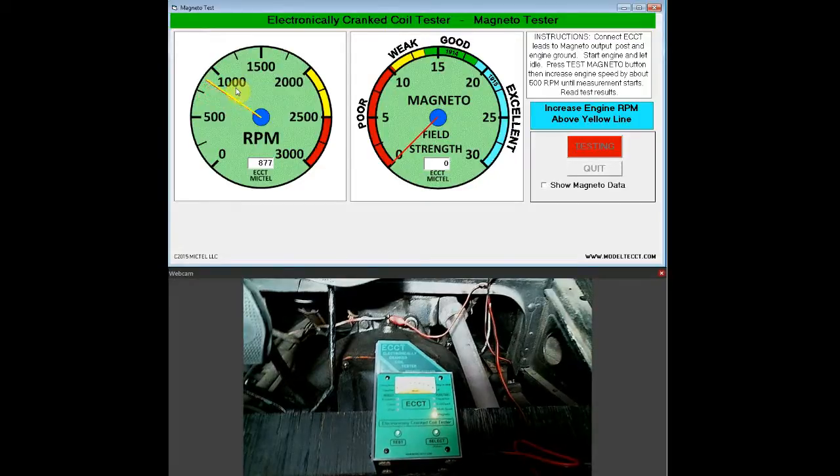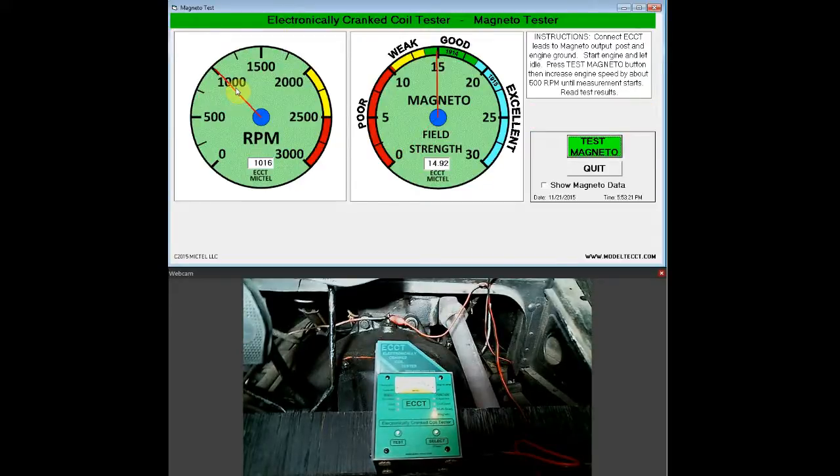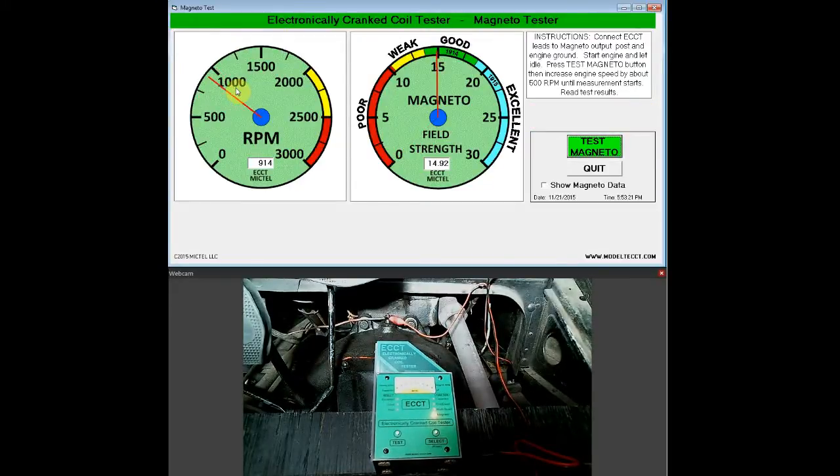Once that happens, the testing begins and it measures the Magneto field strength, then displayed on the field strength indicator. In this case, the result is good. The indicator is just below the 1914 line. The 1914 and 1915 indicators on the gauge correspond to the vintage St. Louis Magneto tester for comparison, for folks familiar with that.